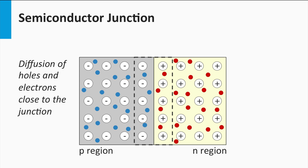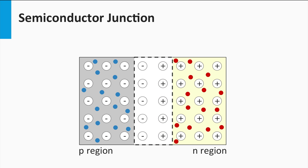What happens in reality? At the interface region, some holes will diffuse to the n-region and some electrons will diffuse to the p-region. As the diffusion length of holes in n-type is short, they will soon recombine with one of the majority electrons. The same is valid for the electrons, as the diffusion length of electrons in p-type is short as well. As a result, there is a small region around the p-n interface in which all charge carriers are wiped out. In this region, the only charges present are those related to the background donor and acceptor atoms. This region is called the space charge region, also referred to as the depletion zone. The space charge region is depleted from mobile charge carriers.